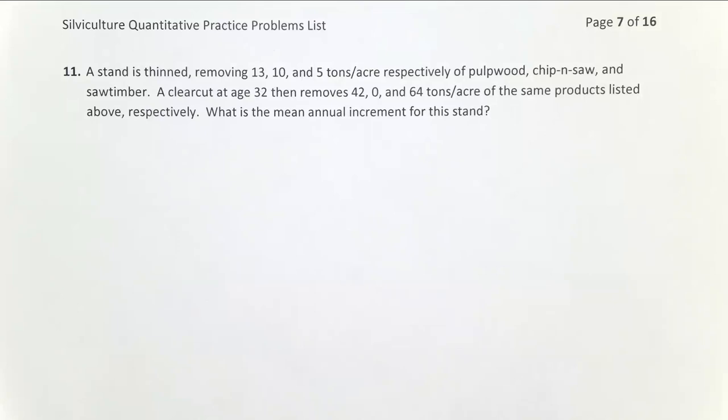Problem 11 is focused on calculating mean annual increment. In this class, we're defining mean annual increment as only merchantable wood, so we're looking at pulpwood, chip-n-saw, and sawtimber. You could calculate a mean annual increment that included non-merchantable wood as well, but we'll focus on merchantable wood this semester.